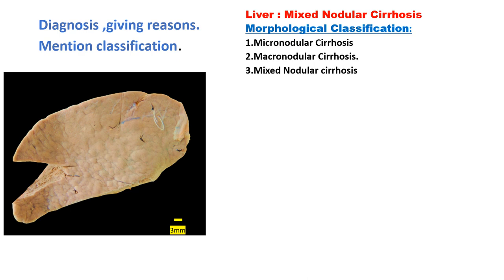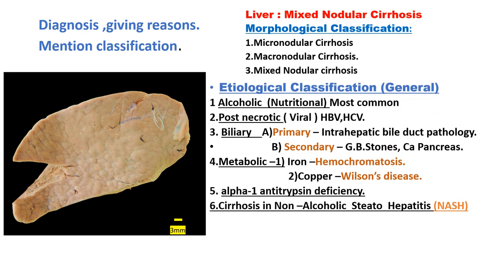Cirrhosis is classified on the basis of morphological appearance and etiological factors. Morphologically: micronodular cirrhosis has nodules less than 3 mm; macronodular cirrhosis has all large nodules; and mixed nodular cirrhosis has both. This is the morphological classification, but examiners often want you to enlist the etiological classification as well.